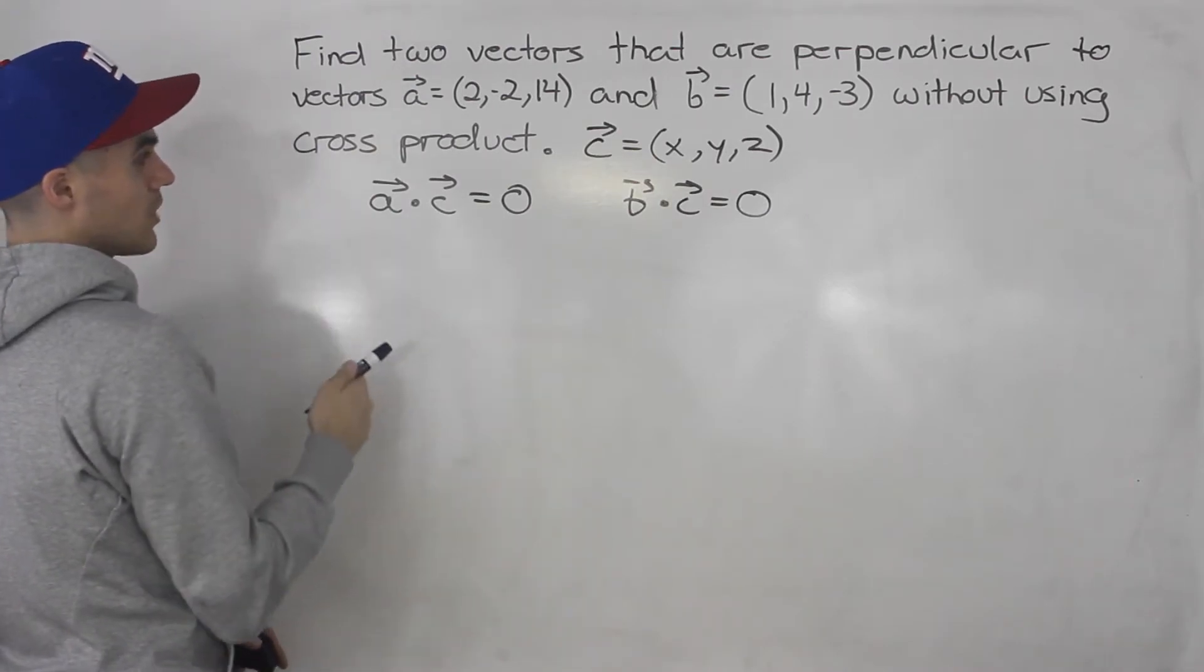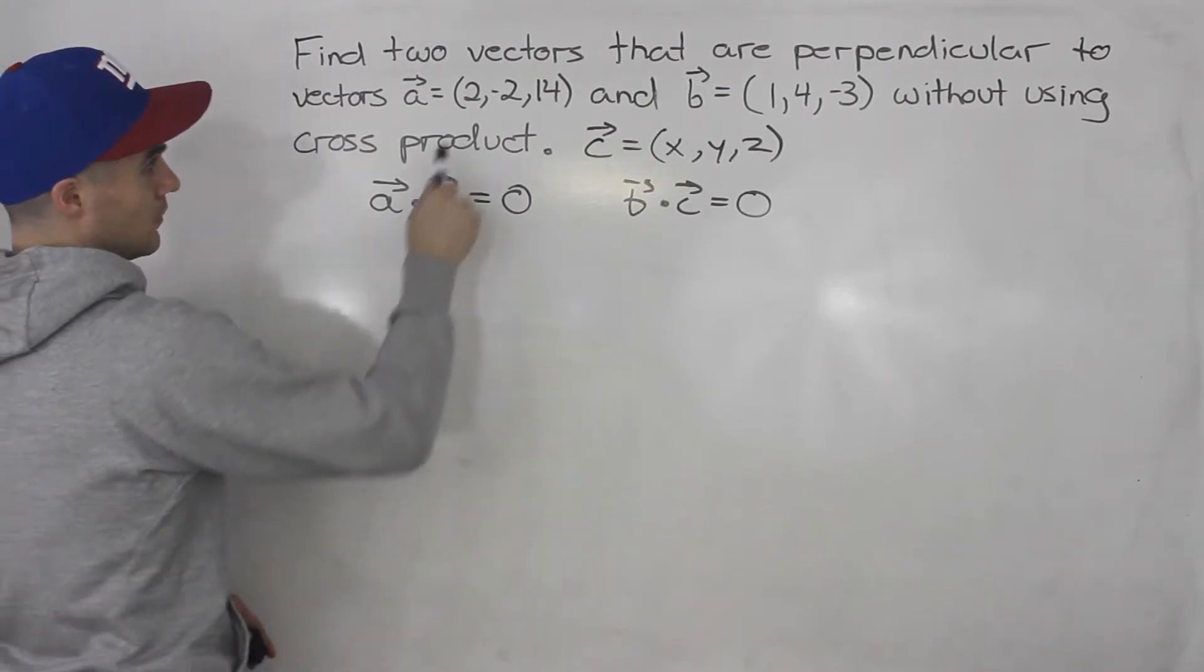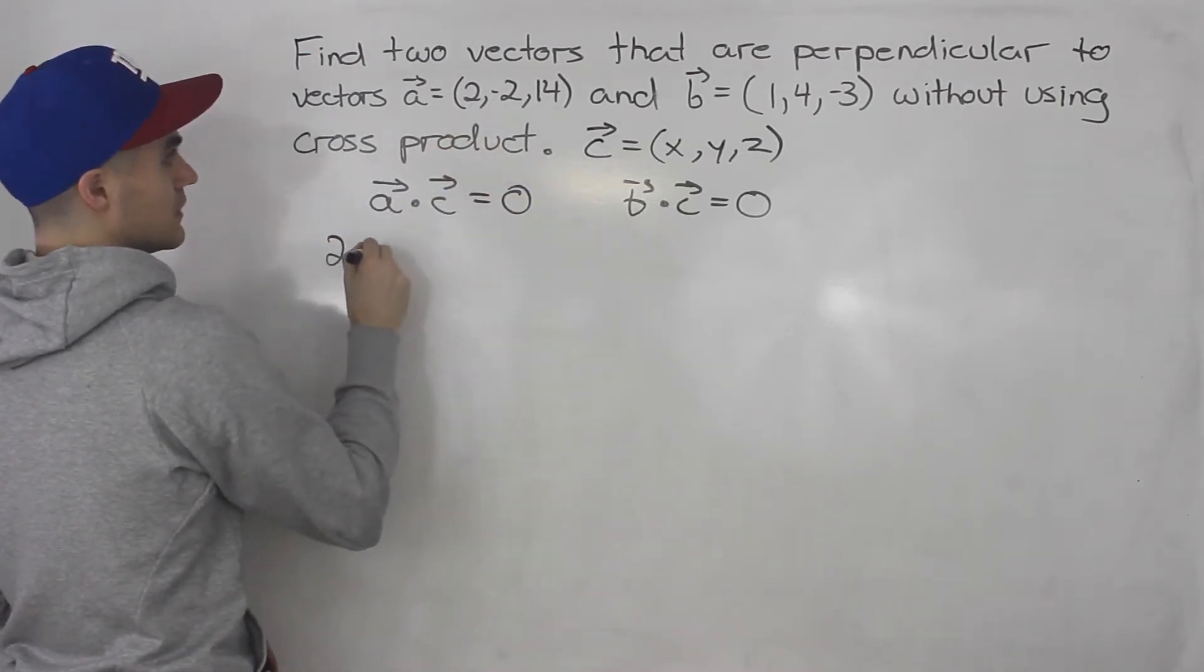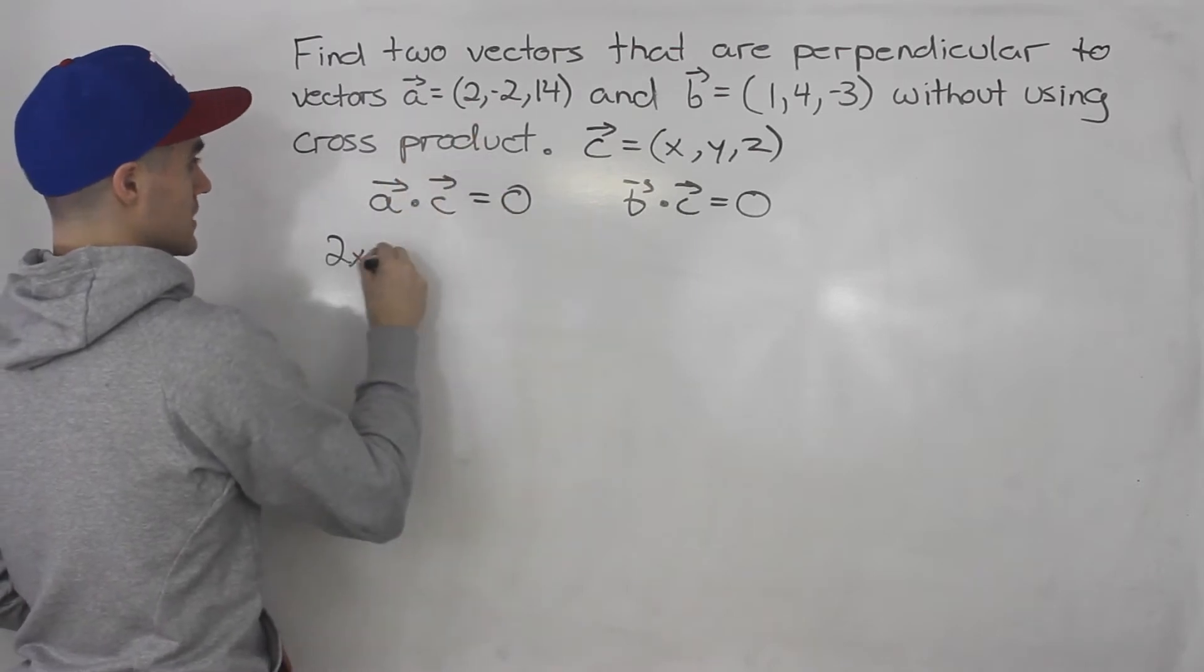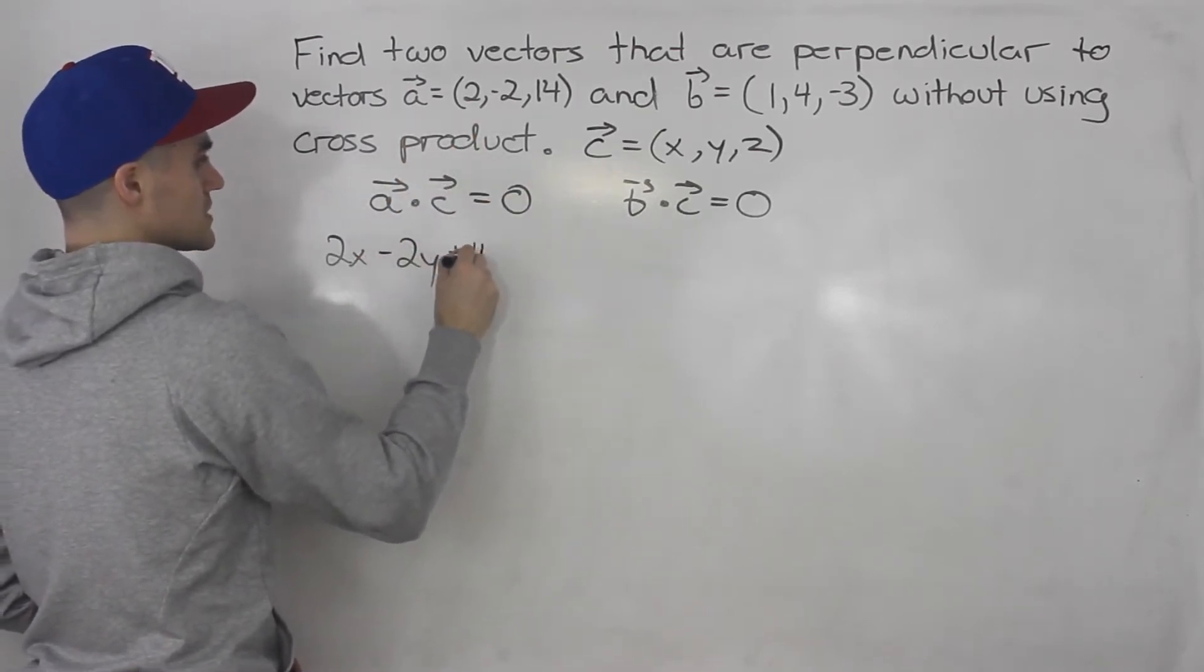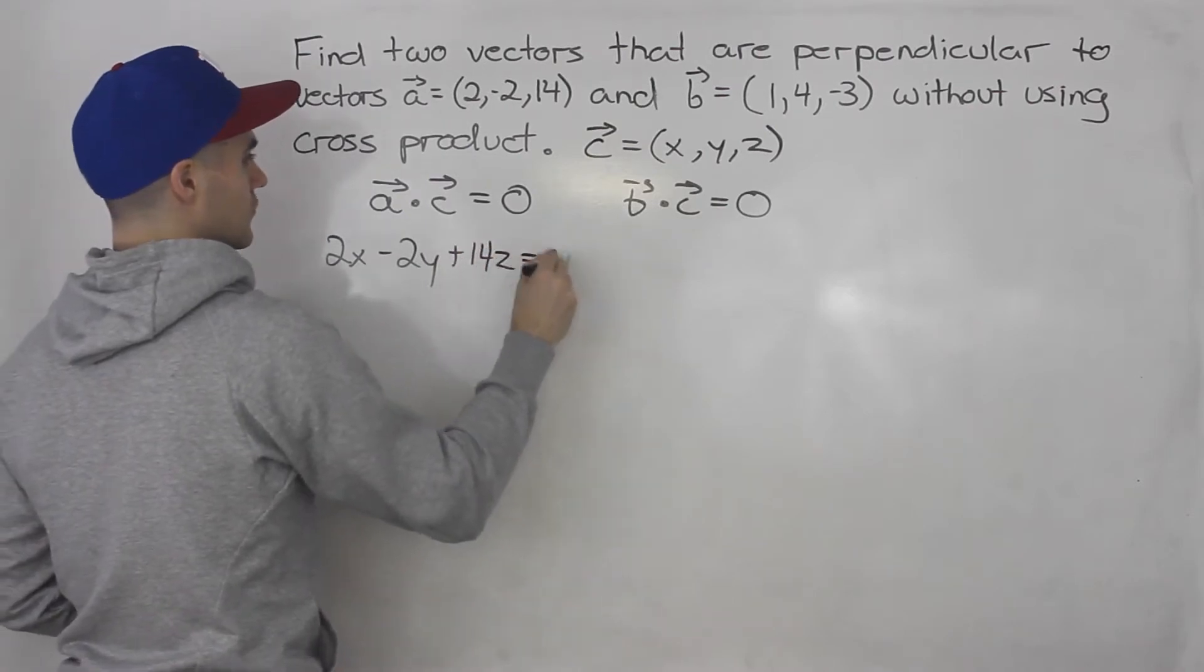So starting off here, what's the dot product between A and C going to be? Well, we just multiply the components and add them together. So 2 times X is 2X, negative 2 times Y is negative 2Y, and then 14 times Z, 14Z. And that's equal to zero.